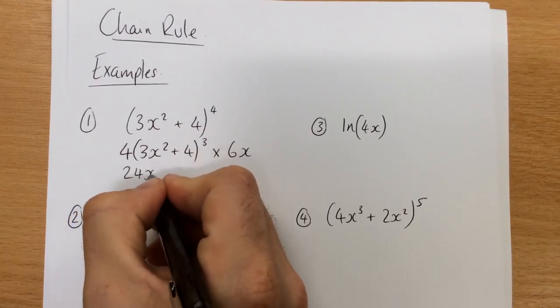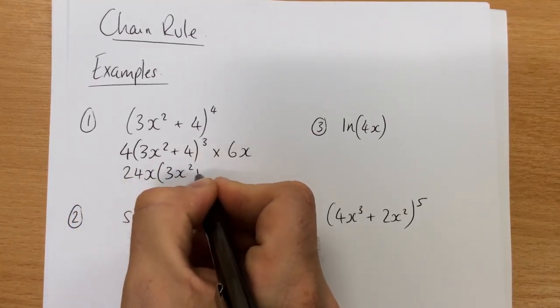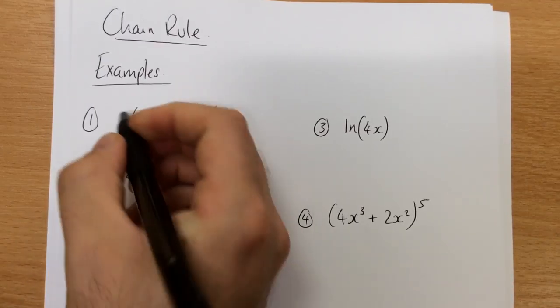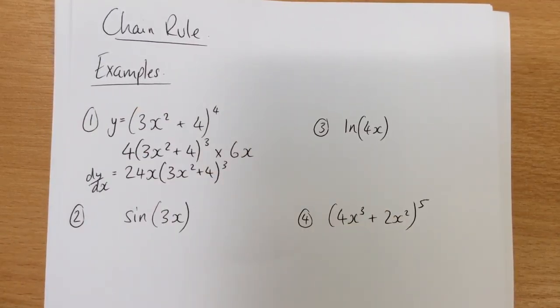Just tidy it up, 24x, and then the bracket cubed, and that is our dy by dx, when y was that bracket at the top.